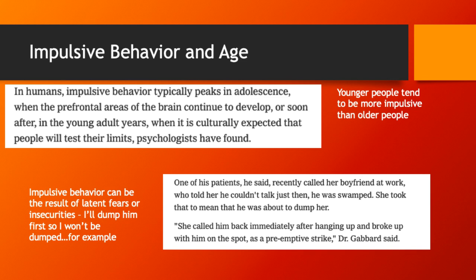One thing I find particularly interesting about the study of impulsivity is its connection to age. In humans, impulsive behavior typically peaks in adolescence, when the prefrontal areas of the brain continue to develop. The research done by Stanford shows that younger people tend to be more impulsive than older people — which I'm sure comes as no particular surprise to all of you. Impulsive behavior can also have a variety of triggers.